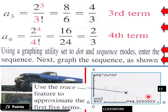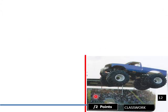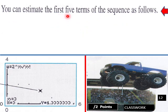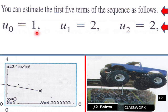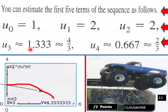Use the trace feature to approximate the first five terms. Your graph will fall quickly and get very close to zero. From the graph, the estimated first five terms are: u₀ = 1, u₁ = 2, u₂ = 2, u₃ ≈ 1.333, and u₄ ≈ 0.667, which equals two-thirds. That's how your graph would look.